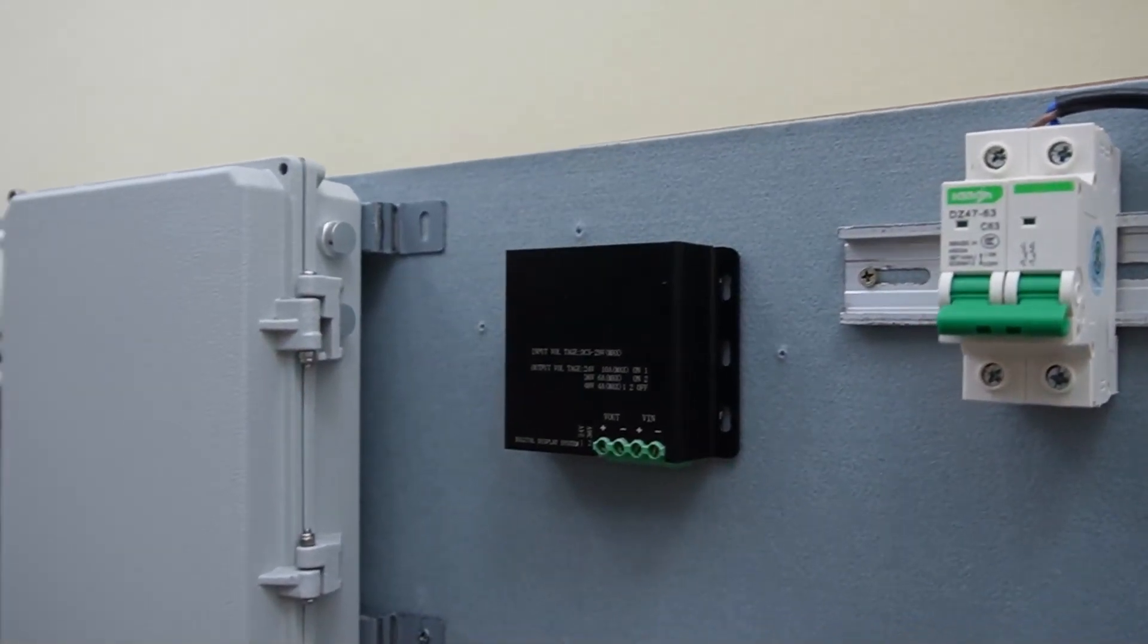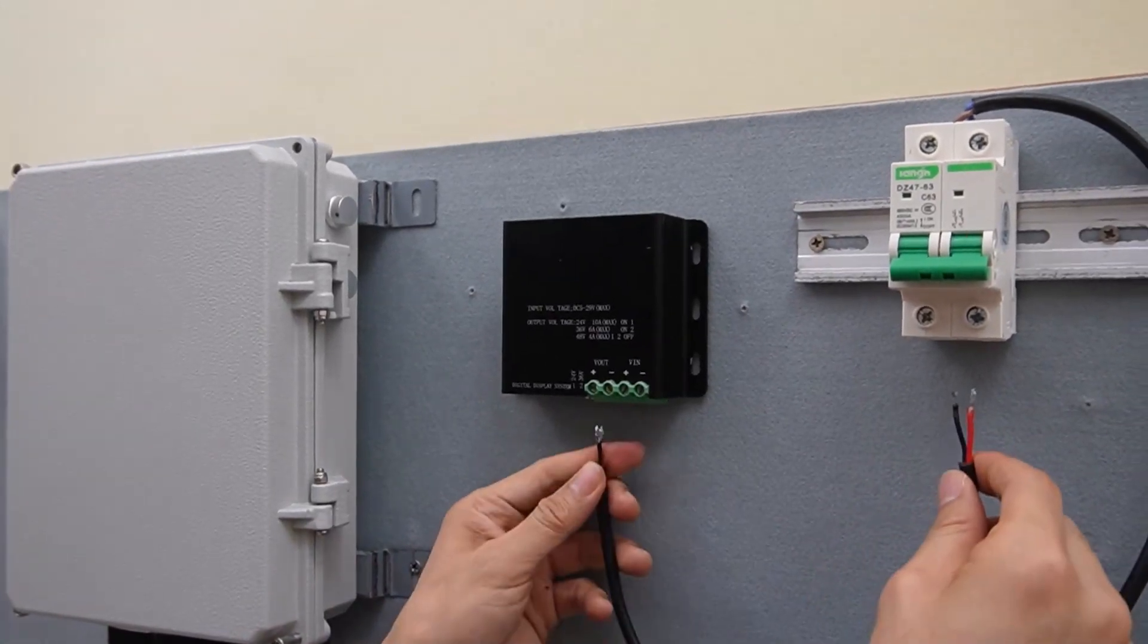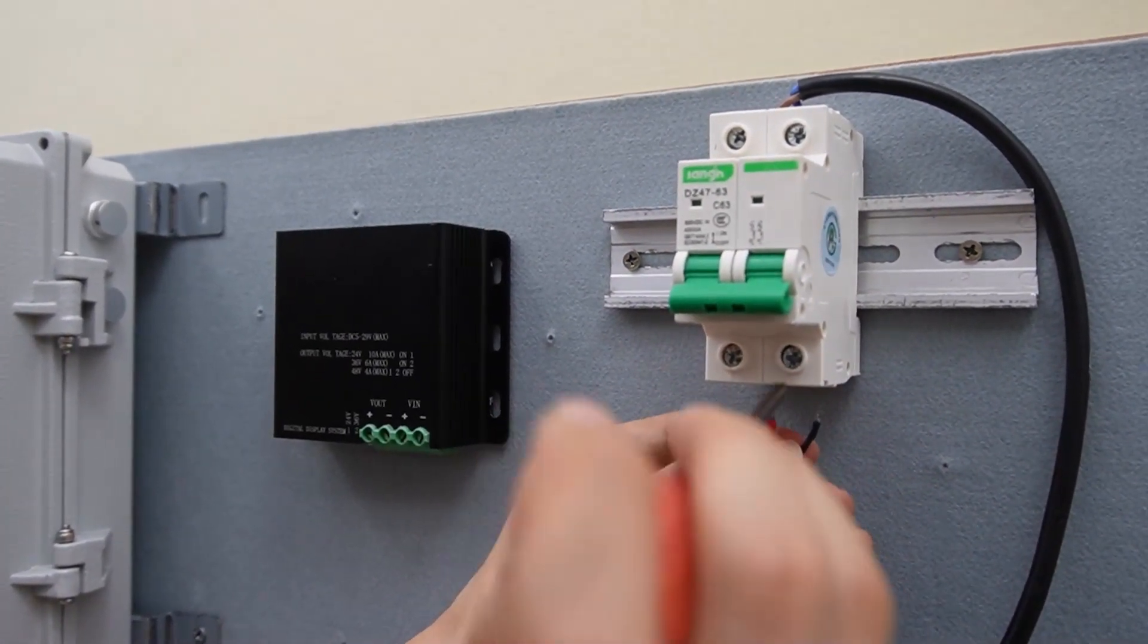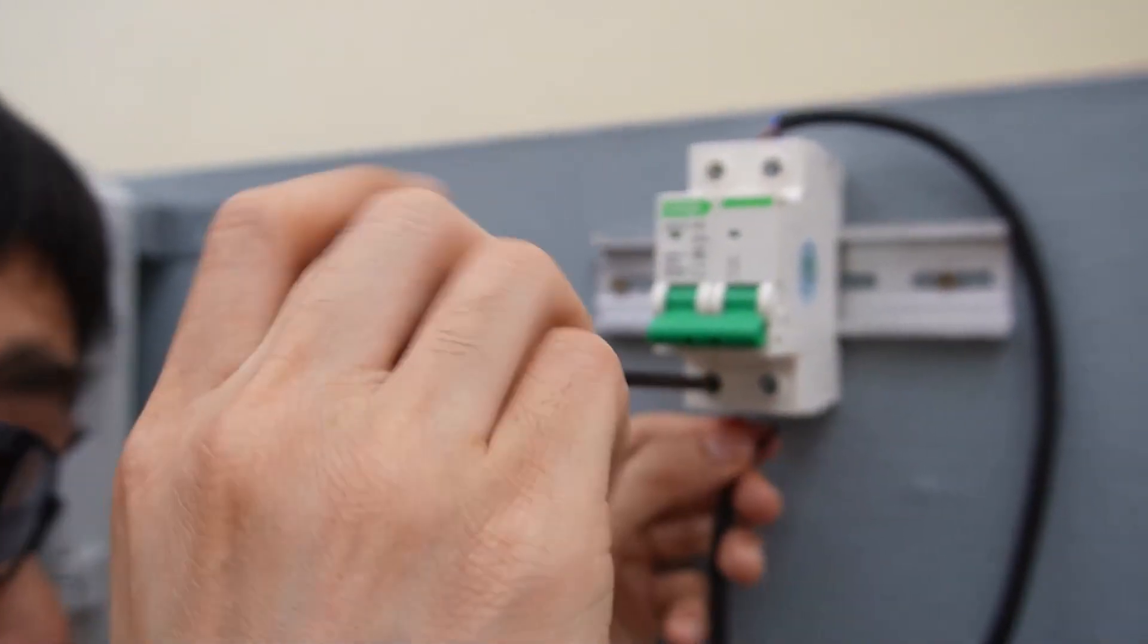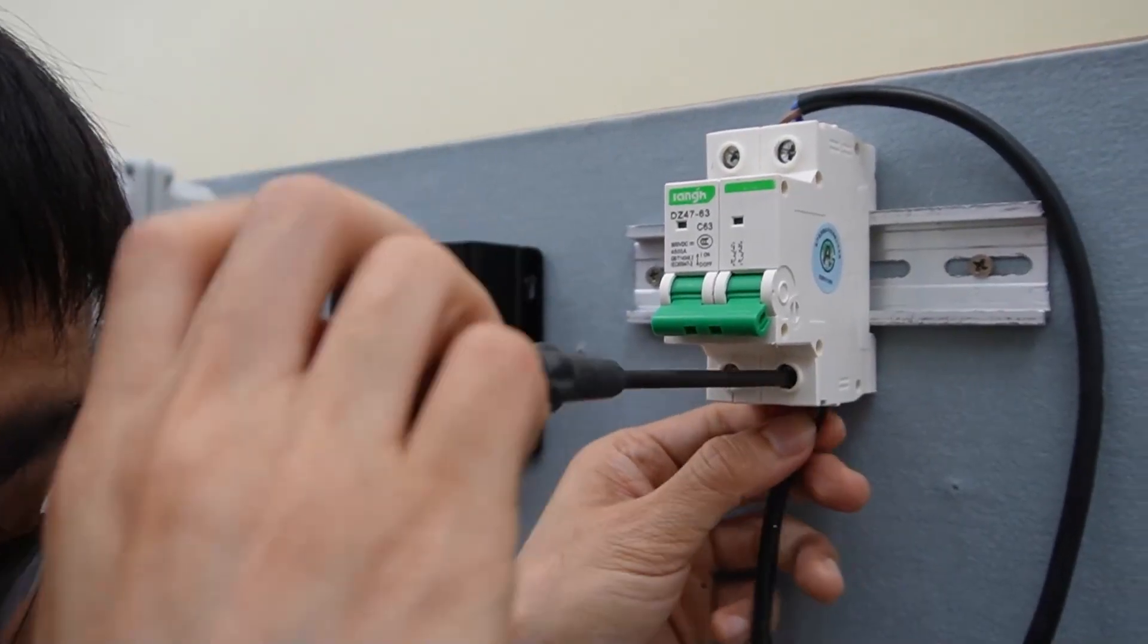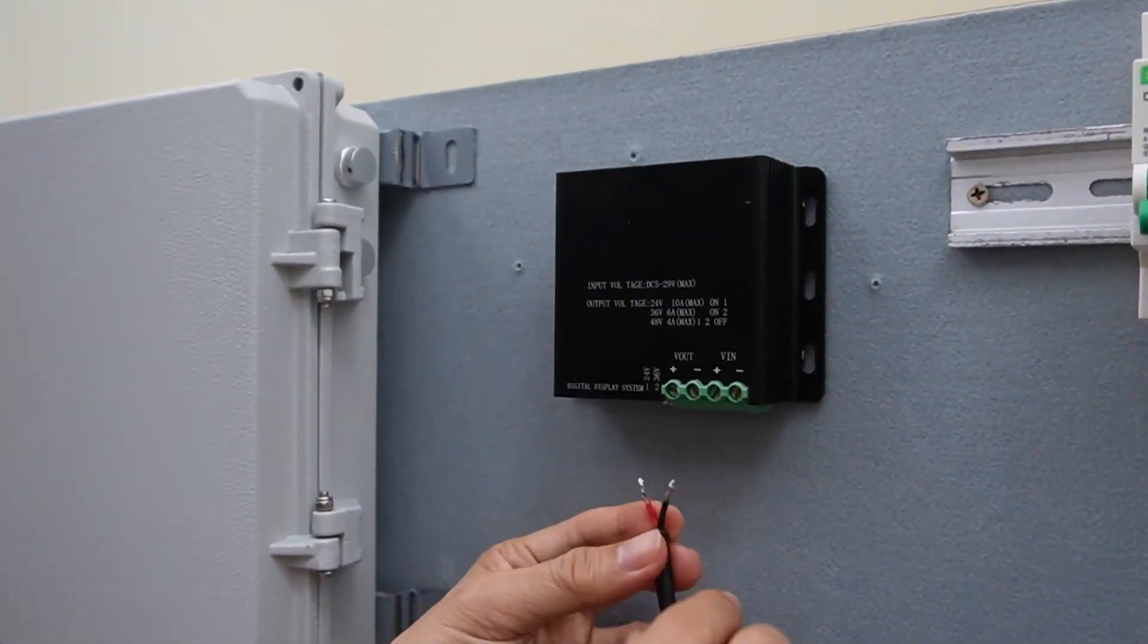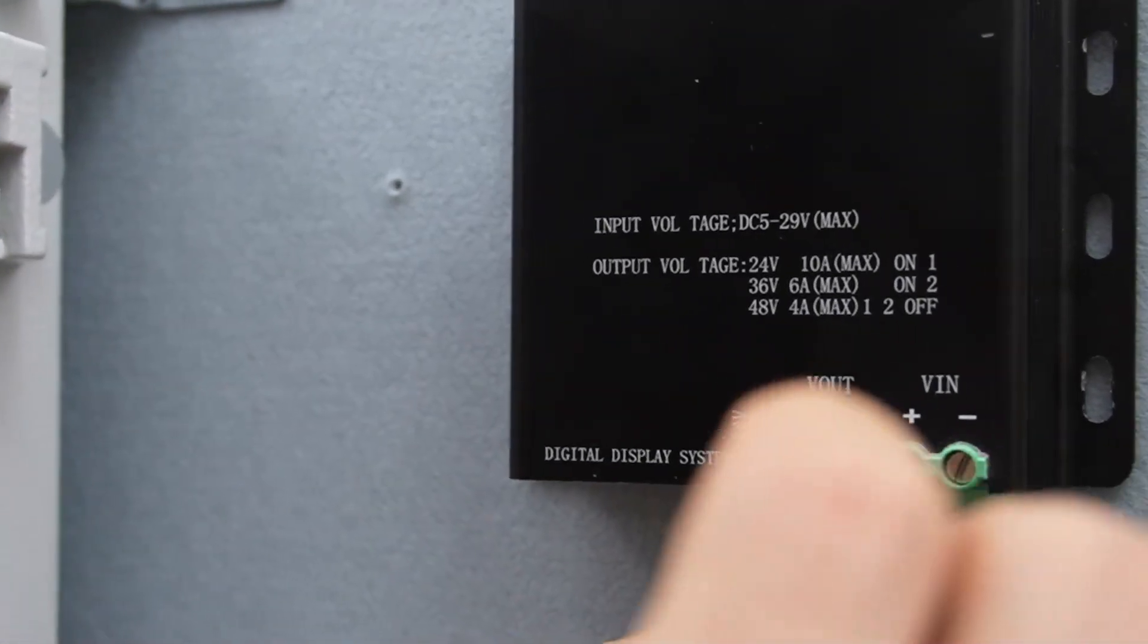Now, we need a short patch cord to link this breaker to this voltage booster. I use the red stand for the positive and the black for the negative. Always remember the positive and negative and don't mix up, otherwise you are going to fry these devices. Now, let's connect this breaker to the input of the voltage booster. Still, we have the positive and the negative.